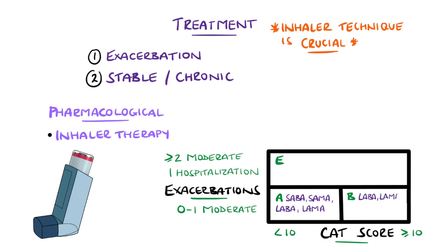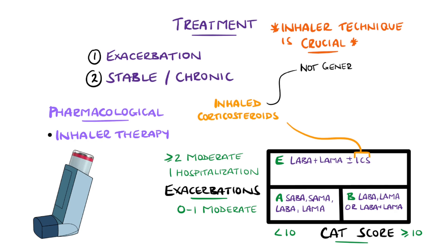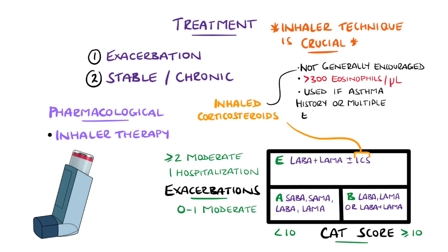Group B typically has a combination of long-acting muscarinic antagonists and long-acting beta-agonists, but may have monotherapy, while group E usually has a combination of LAMA and LABA. Inhaled corticosteroids are not generally encouraged, but may be added if the eosinophil count is above 300 cells per microlitre initially, or above 100 on follow-up. A history of asthma or multiple severe exacerbations are also indications.